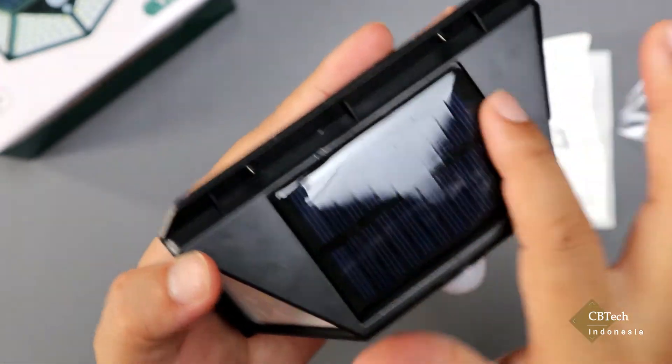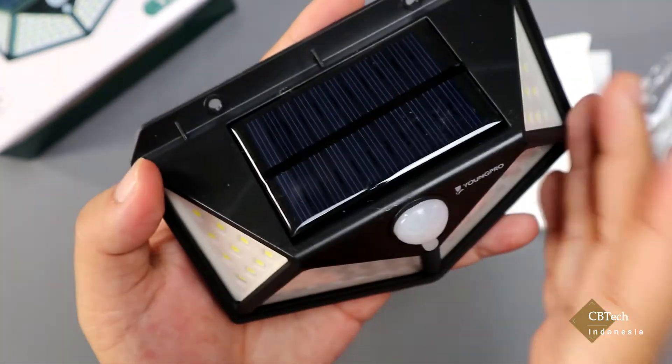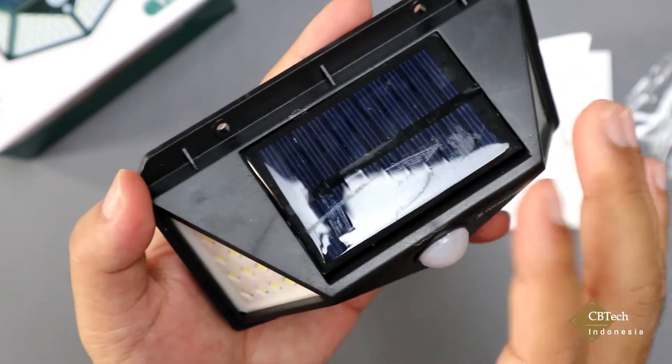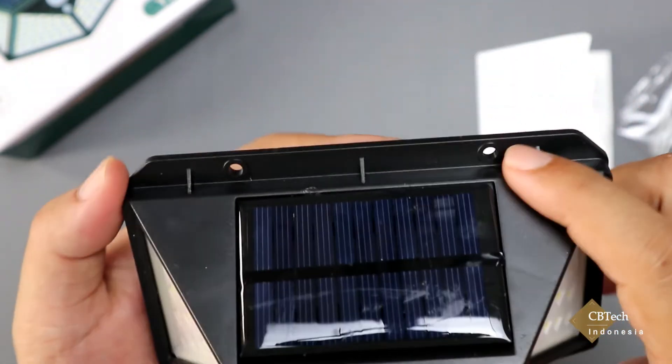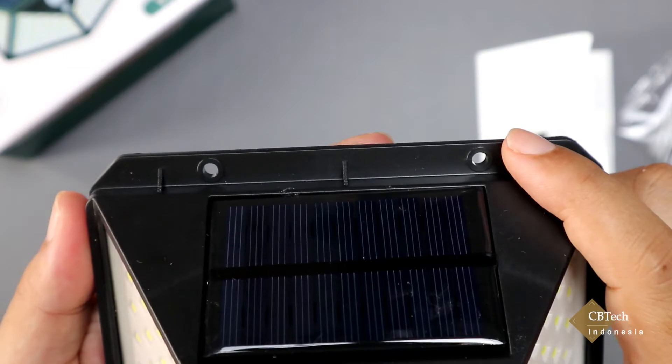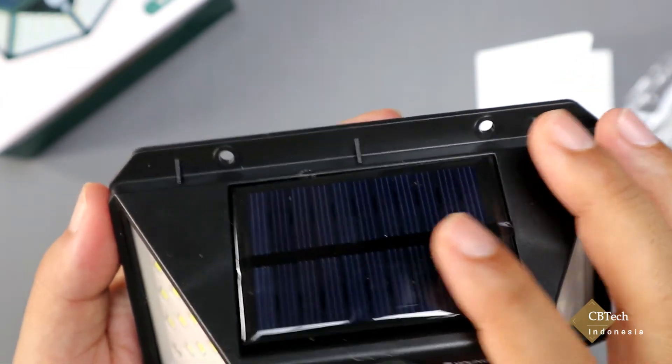Dan ini adalah solar cellnya, tempat dimana pengisian baterai. Jadi ini begitu dia menerima panas, maka baterai akan terisi. Dan begitu juga di sini juga ada lubang skrup atau lubang baut, tempat dimana nanti kita akan memasangkannya di dinding atau media lainnya.